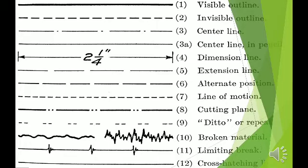The line types include: 1. Visible Outline, 2. Invisible Outline, 3. Center Line, 3A. Center Line in Pencil, 4. Dimension Line, 5. Extension Line, 6. Alternate Position, 7. Line of Motion, 8. Cutting Plane, 9. Ditto or Repeat, 10. Broken Material, 11. Limiting Break, and 12. Cross Hatching Line.